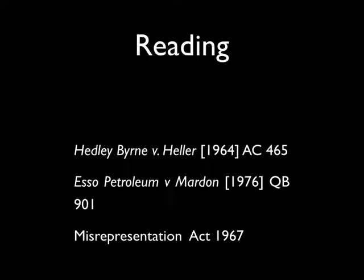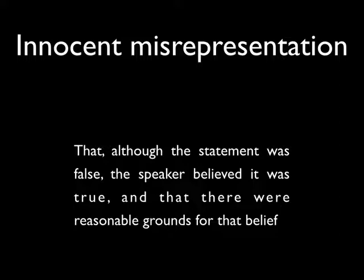The third type of misrepresentation is innocent misrepresentation, and this is probably best summed up as the situation in which someone who, despite making a false statement, is able to avail themselves of the defence under the Misrepresentation Act of 1967 — that although the statement they made was in fact false, they believed that it was true and that there were reasonable grounds for that belief. It does not mean that what they said was correct, but it does mean that no culpability under the law of misrepresentation attaches to their false statement.